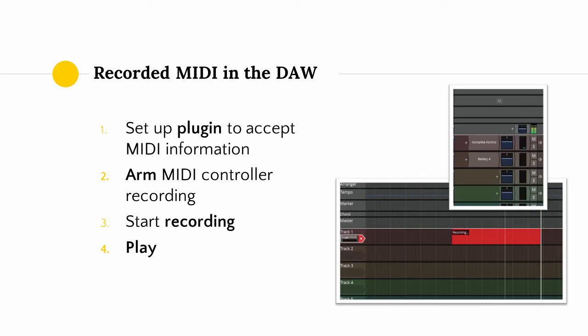So how do we get MIDI to work in our DAW? If we want to hear sounds when playing MIDI data, first we have to ensure that that data gets fed to a plugin that can accept MIDI data. Different DAWs have different means of accomplishing this. In Traction Waveform, what I have to do is put a virtual instrument on a track, enable MIDI recording on that track for a particular MIDI controller such as a keyboard or pad controller, start recording, and play my instrument.